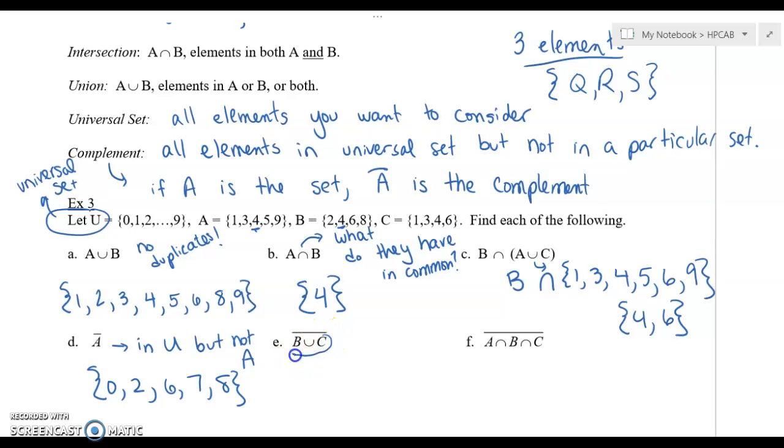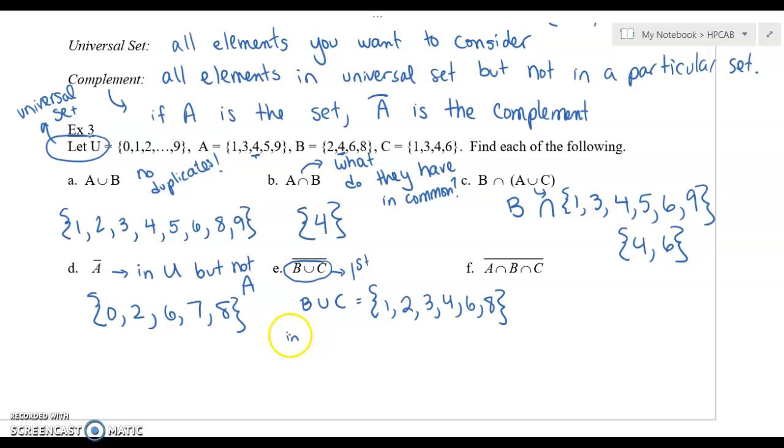This one, you're going to want to do B union C first and then do the complement. So B union C, let's see what that is. B union C is the combination of those together. So we've got 1, we've got 2, we've got 3 and 4. We don't have a 5. We have 6 and we have 8. And then this is the complement. So this means basically in U, but not B union C. So anything that's in the 0 through 9 but not in here. So that would be part of U but not this part. Then we're missing 7 and 9. So 0, 5, 7, and 9.